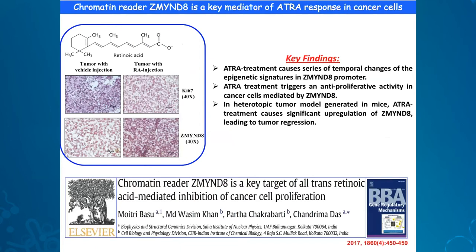We asked the question: what is the role of D8 in ATRA-responsive gene expression regulation? We identified that D8 is one of the important mediators of ATRA response in cells. When cells are treated with ATRA, among several factors, D8 is one of the key factors that gets induced and turns on several other ATRA-responsive genes, thereby inhibiting cancer cell proliferation. We observed this in the cellular context and revisited these findings in a mouse tumor model, where tumors injected with ATRA showed hyperexpression of D8 by immunohistochemistry.